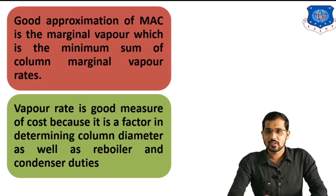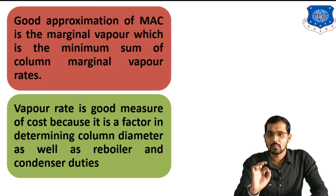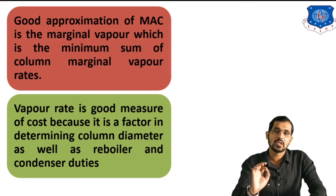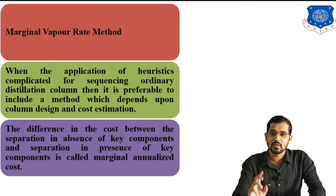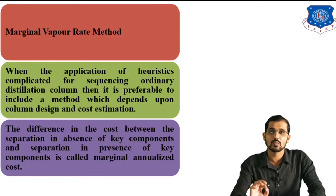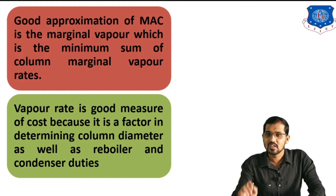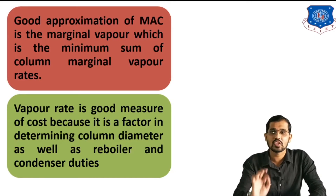According to marginal annualized cost, a good approximation of MAC — that is, marginal annualized cost — is the marginal vapor, which is the minimum sum of column marginal vapor rates. So, MAC is the difference in cost between separation in absence versus presence of key components, and a good approximation of MAC is the marginal vapor representing the minimum sum of column marginal vapor rates.